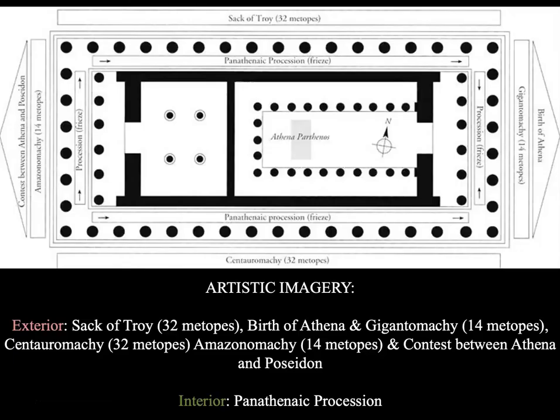Here are some of the vocabulary terms: centauromachy, gigantomachy, Panathenaic procession, and Amazonomachy — too many vowels. There are a series of different metope series on the exterior as well as the interior, including the Panathenaic procession, the sack of Troy, the birth of Athena, the centauromachy, the Amazonomachy, and the contest between Athena and Poseidon. I'm going to lay them out briefly because they're important to our conversation about the Parthenon when we come back from break.